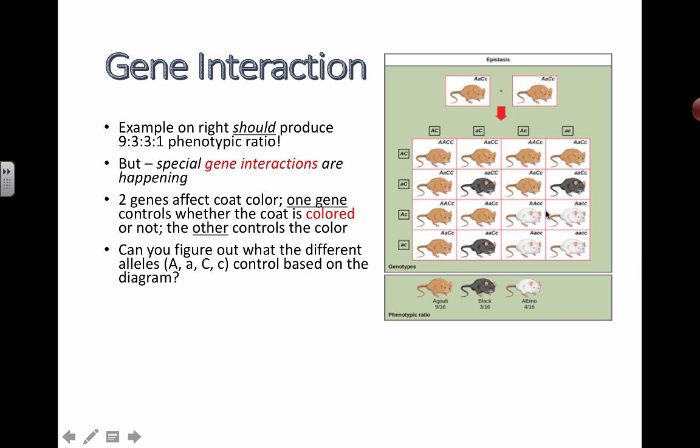Albino mice means they don't have any color actually expressed. And if I take a close look at their genotypes, what do they all have in common? They are all little c little c. That makes me think that the C gene actually controls whether or not there's any color at all.